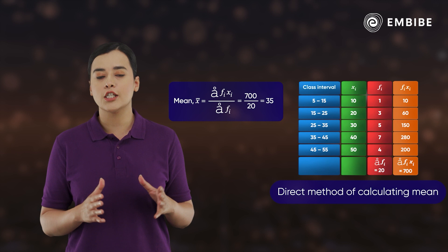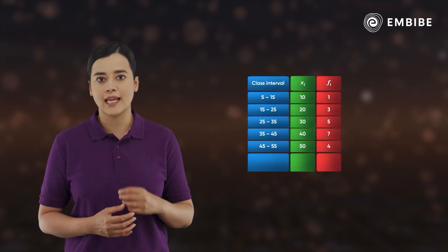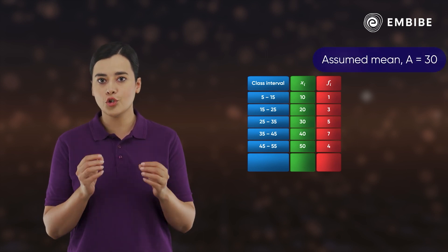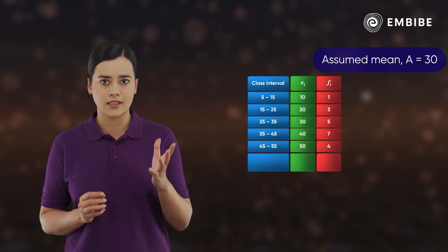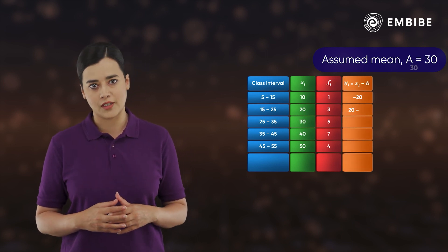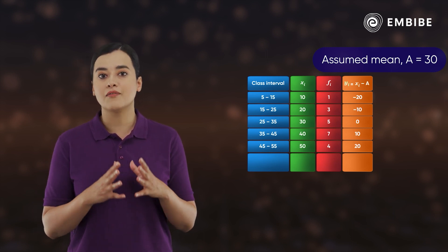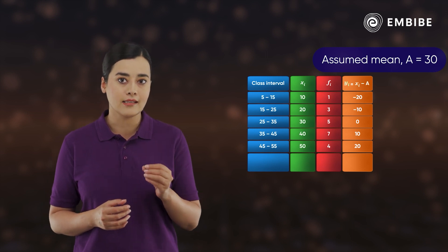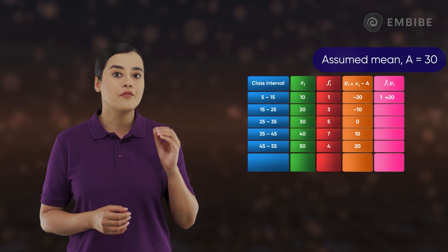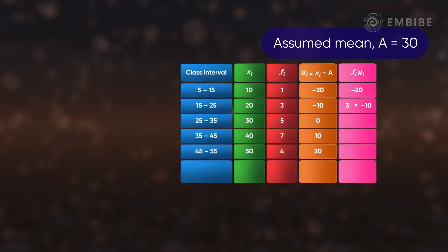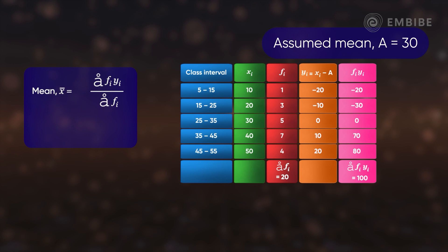This method of calculating mean is called the direct method. The calculation can be simplified by subtracting an assumed mean — a number somewhere in the center, say 30 — from each of the observations. Let the new variable after these substitutions be yᵢ's. Multiply these yᵢ's by the frequencies. The sum of fᵢyᵢ's is 100 and the sum of fᵢ's is 20. The subtracted center number is then added back, so the mean is 30 + 100/20, that is 35.